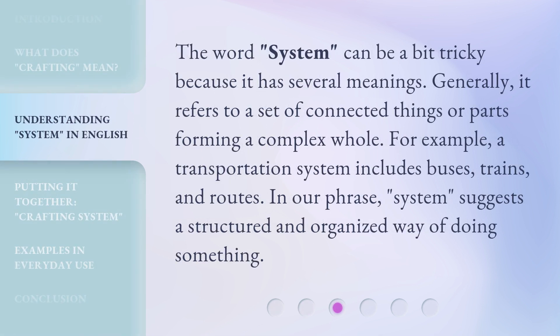The word 'system' can be a bit tricky because it has several meanings. Generally, it refers to a set of connected things or parts forming a complex whole. For example, a transportation system includes buses, trains, and routes. In our phrase, 'system' suggests a structured and organized way of doing something.